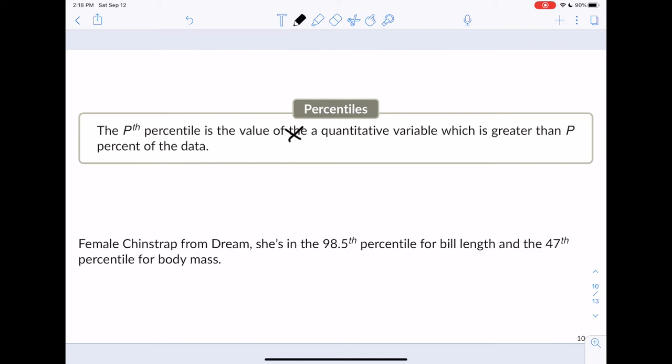If we go back to thinking about our female chinstrap, remember she had a very large bill, 2.75 standard deviations above the mean. That would have actually put her in the 98.5th percentile for bill length. Her body mass, and remember she's below the mean, so we'd expect her body mass to be maybe below the 50th percentile. She would be in the 47th percentile for body mass. What that means is that 98.5% of all chinstrap penguins in this sample had bill lengths that were smaller than her.